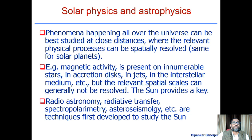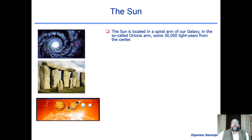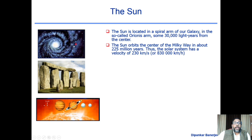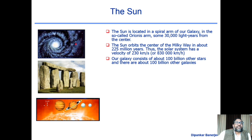The sun is located in the spiral arm of our galaxy — the so-called Orion arm. The sun orbits the center of the Milky Way in about 225 million years. The solar system has a velocity of about 230 km per second, and our galaxy consists of about 100 billion stars, with about 100 billion other galaxies.